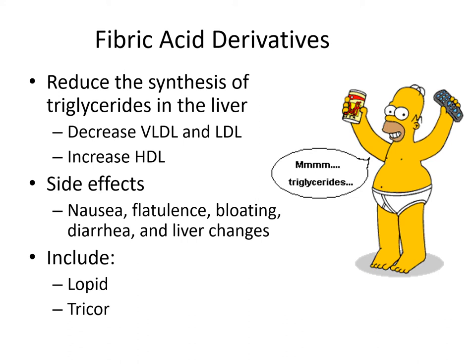The name Lopid, broken apart, sounds like 'lower lipids.' Another example is Tricor — 'tri' for triglycerides, 'cor' for coronary — meaning it lowers triglycerides that contribute to coronary artery disease. The generic name for Tricor is fenofibrate. Both gemfibrozil and fenofibrate are commonly seen in the hospital.